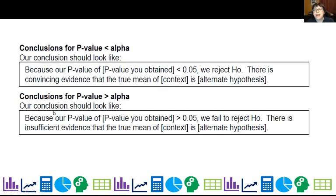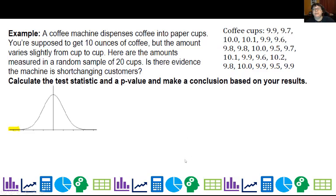Now, if our p-values are high, if the probability of getting something is high, you know, really high, then we're like, yeah, I'm not so surprised, so you didn't change my mind. I failed to reject what I was already thinking, H-naught. There is insufficient evidence that the true mean is whatever the alternate says.